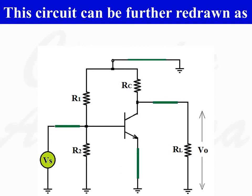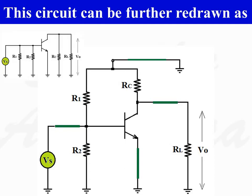This circuit can be further redrawn as shown. Resistor R1 is connected between base and ground. Resistor R2 is also connected between base and ground. Resistance RC is connected between collector and ground. Load resistance RL is also connected between collector and ground. The emitter is connected to ground, as emitter resistance RE is bypassed by the bypass capacitor CE. This is the AC equivalent circuit of a RC coupled amplifier.